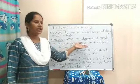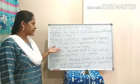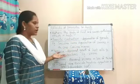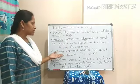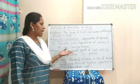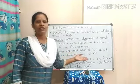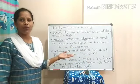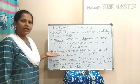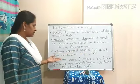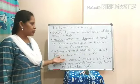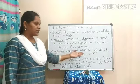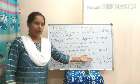Sacculina causes degeneration of ovaries in the crab Carcinus menas. Neoplasia means abnormal growth of host cells — the host cells will grow in an abnormal way. Neo means new, and they develop into different structures, forming new structures. An example is viruses.